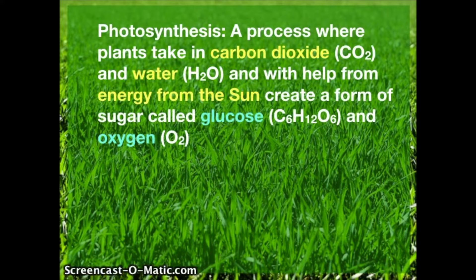Photosynthesis is a process where plants take in carbon dioxide (CO2) and water (H2O), and with help from energy from the sun, create a form of sugar called glucose (C6H12O6) and oxygen (O2).